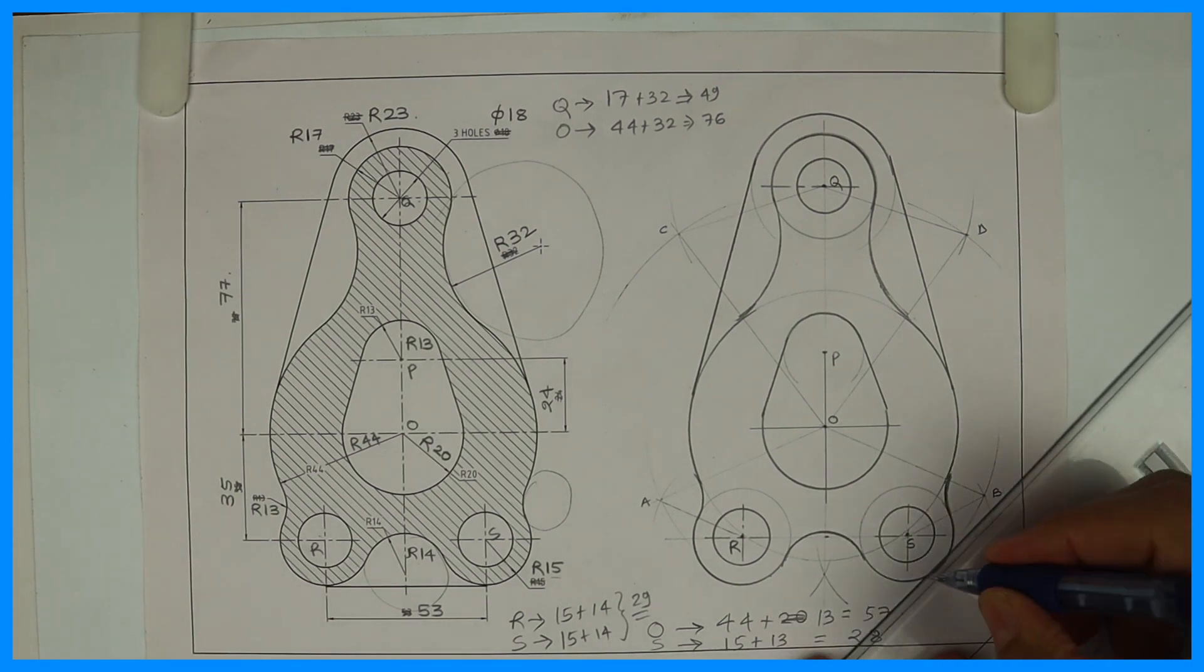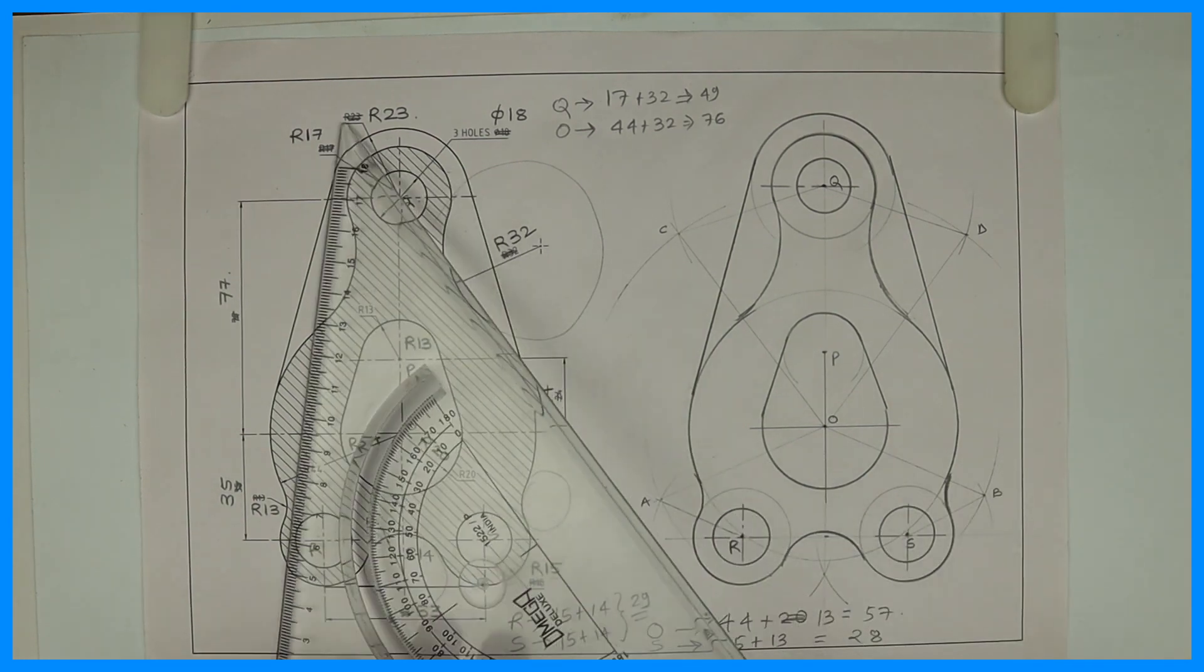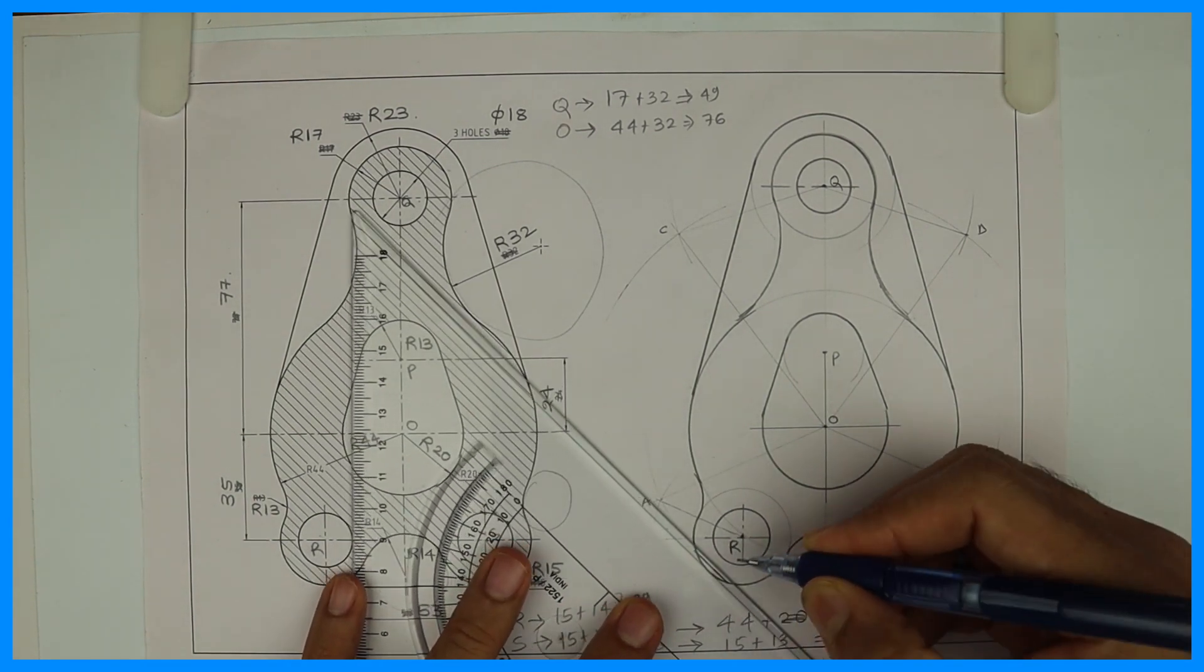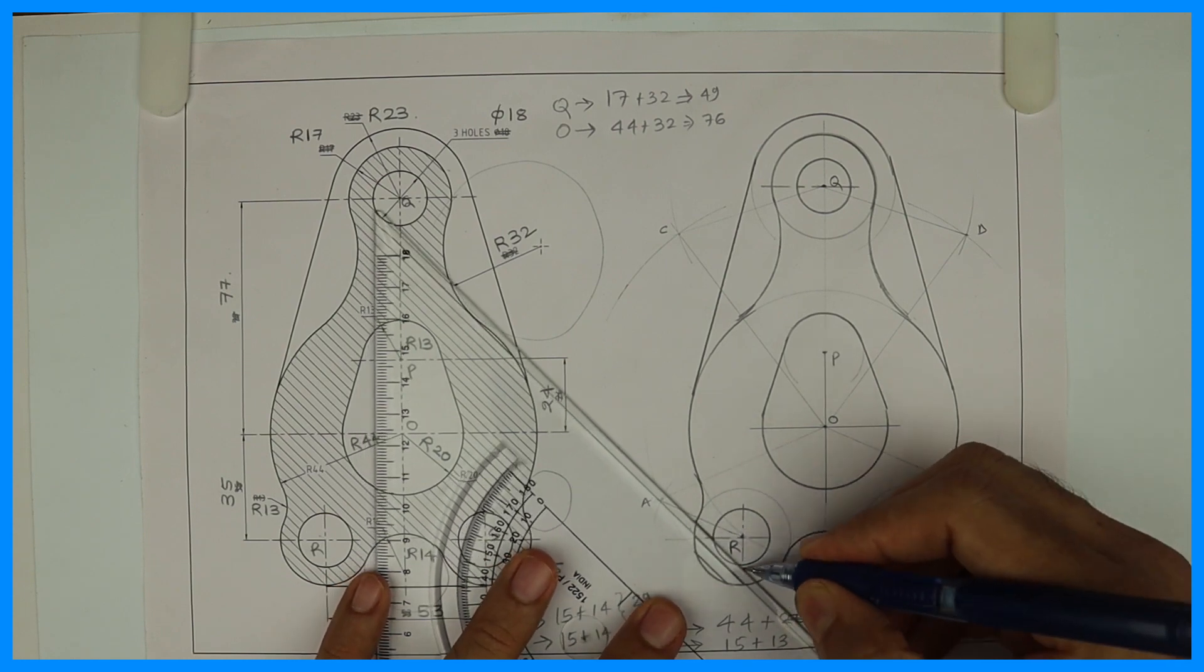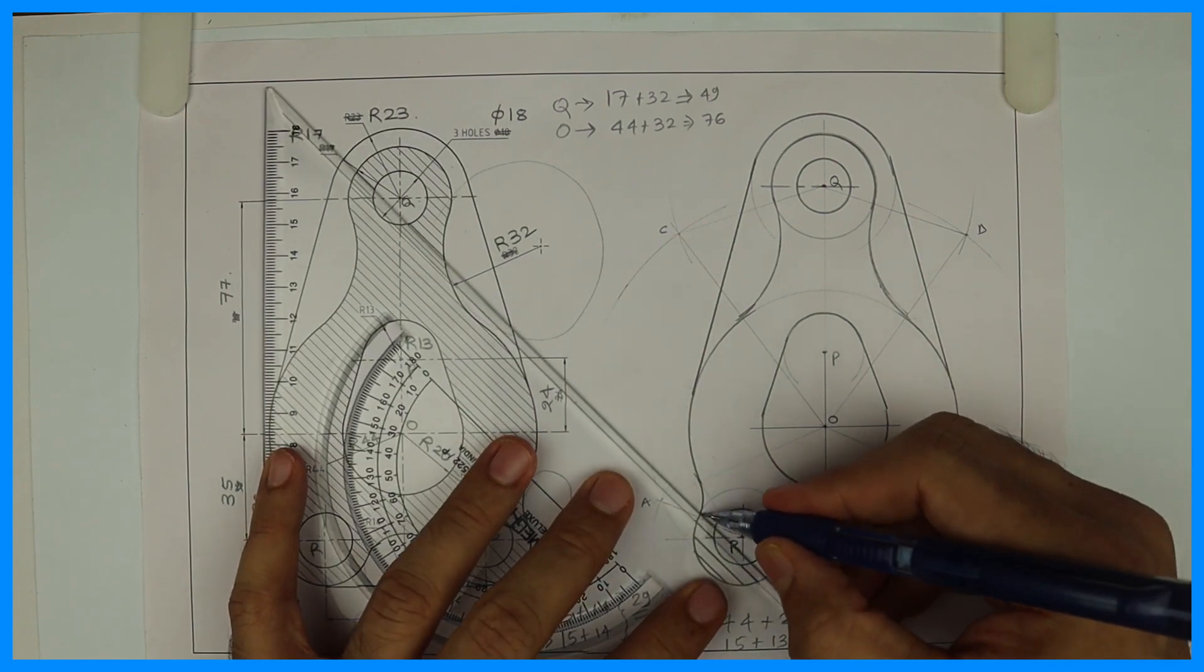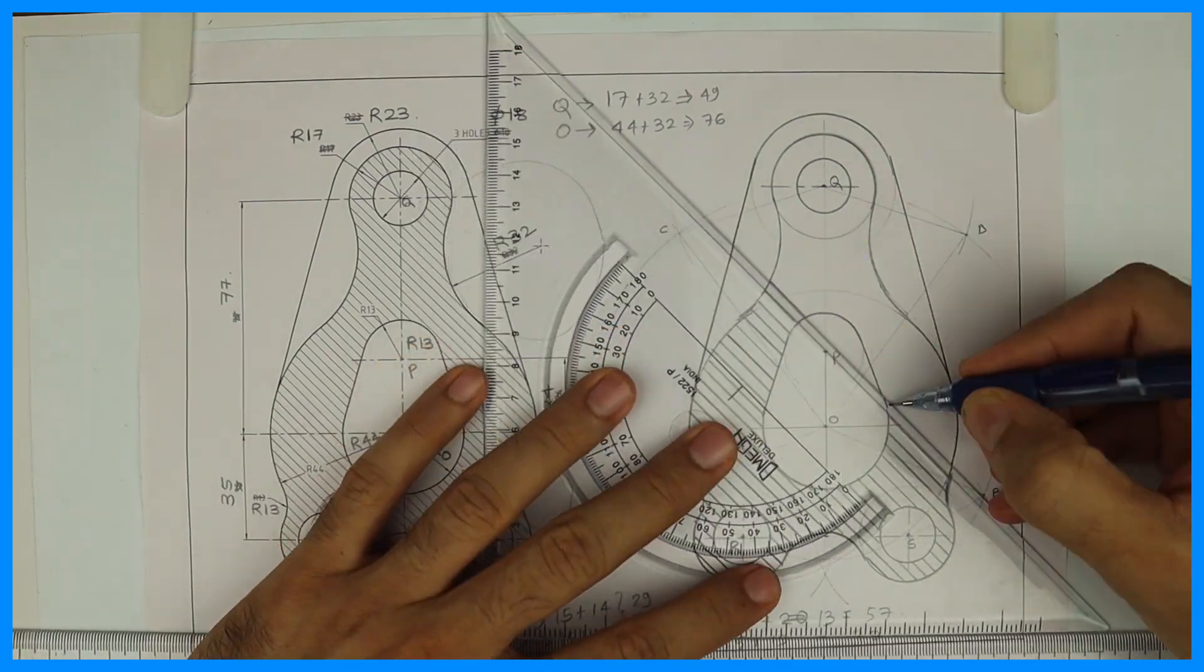Now we need to draw hatching lines. We can draw it this way also, but if you see in the main diagram they have given in this direction, so you draw it in this direction. Remember when you draw all these hatching lines it will be at a distance of two to three millimeter. Thank you.